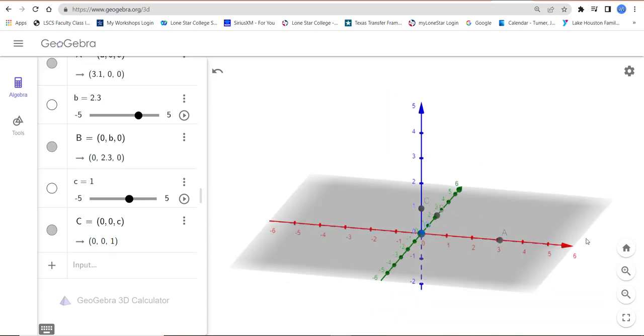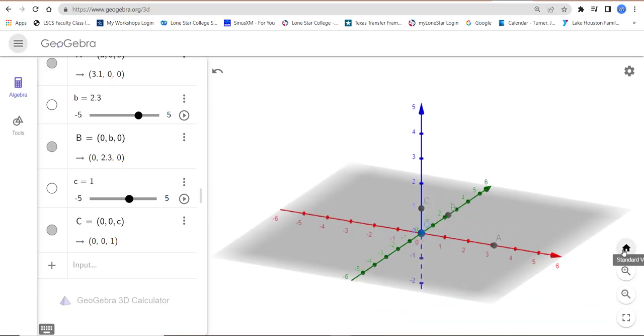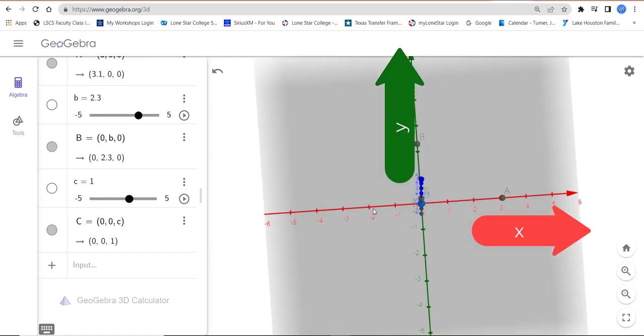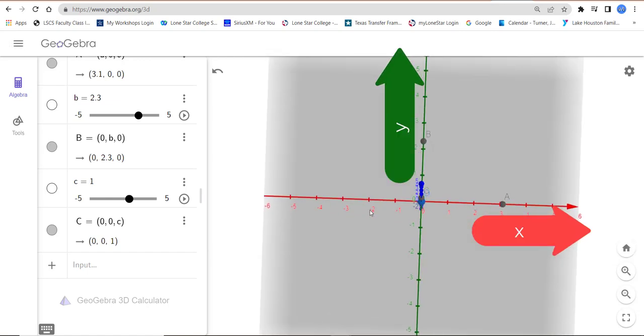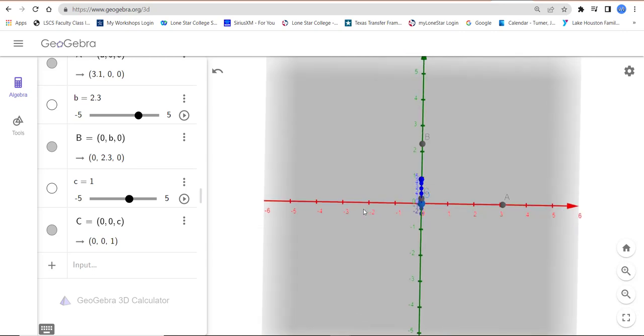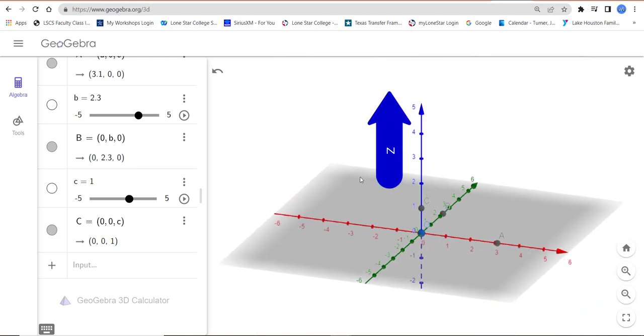How this thing is oriented, you can always hit home and it'll bring you back to this corner view. But you have x to the right, y going up is the 2D view, and then z is the blue axis coming out of the board.